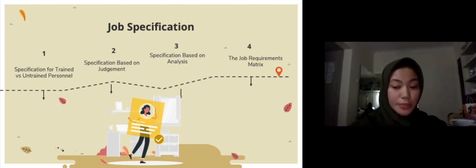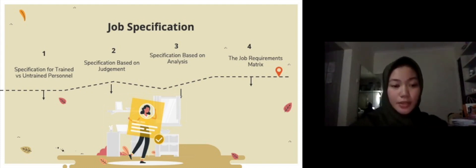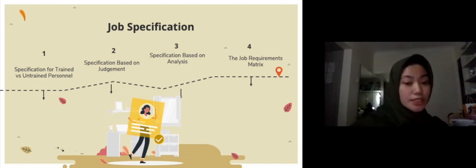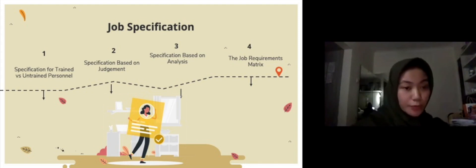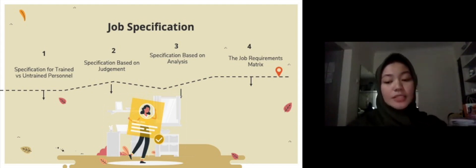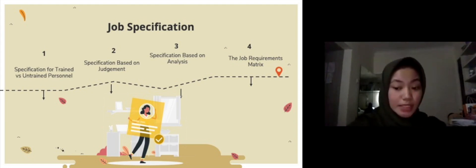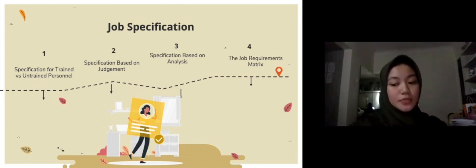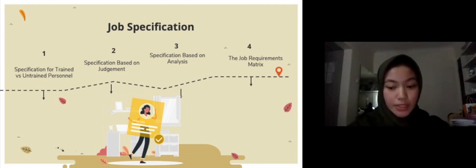The second type is specification based on judgment, where most job specifications simply reflect the educated guesses of people like supervisors and HR managers. The third is job specification based on statistical analysis, which is more defensible but also more difficult. It consists of five steps: analyze the job and decide how to measure job performance; select personal traits that you believe should predict performance; test candidates for those traits; measure the candidates' subsequent job performance; and statistically analyze the relationship between the human trait and job performance.